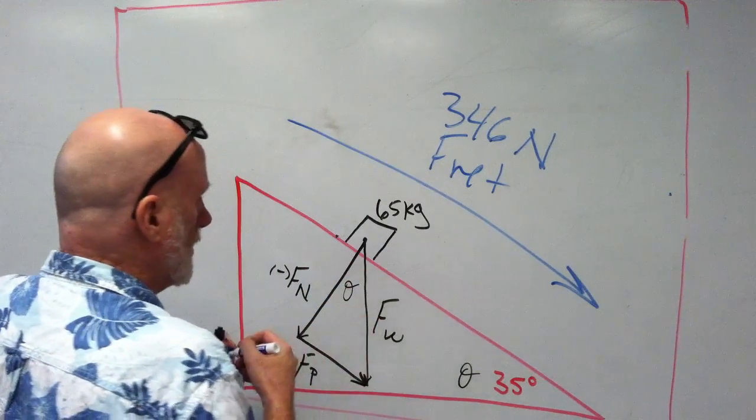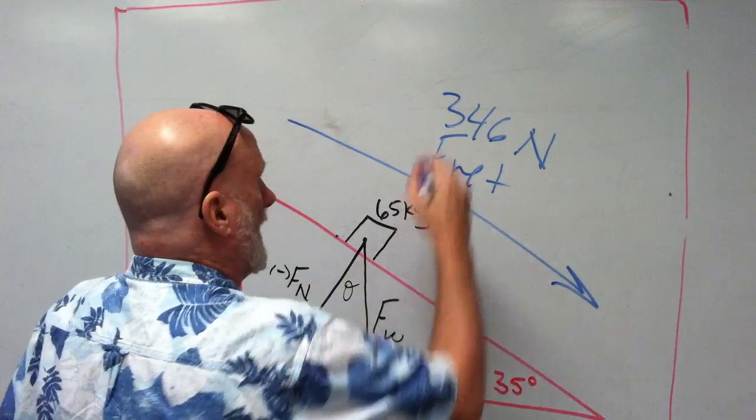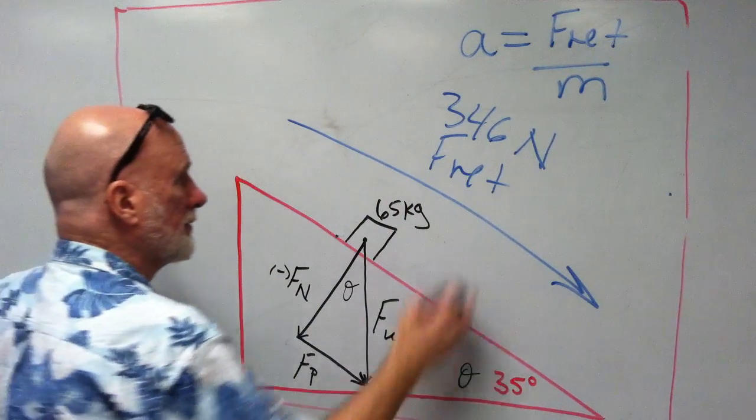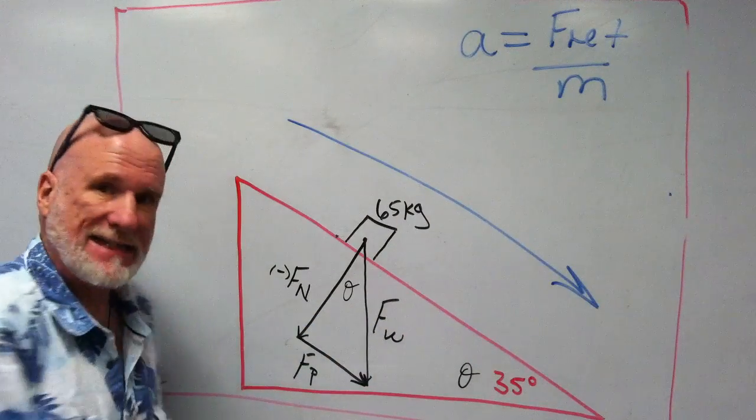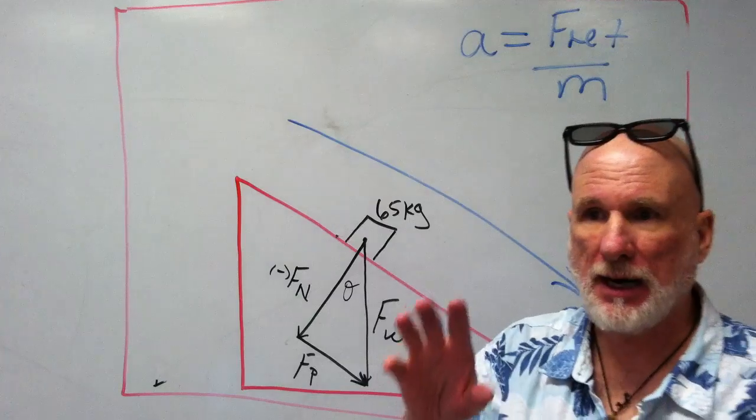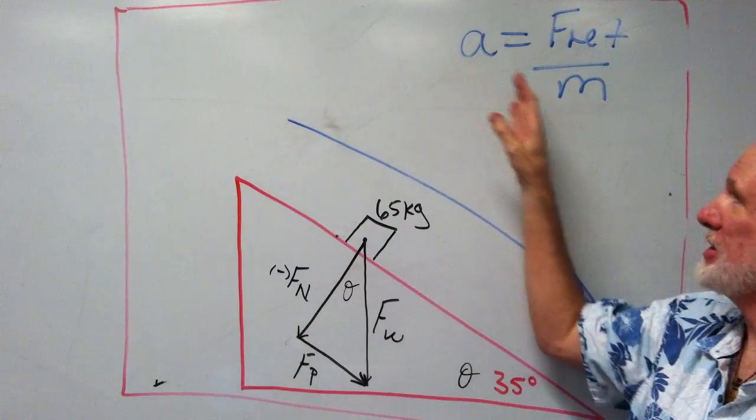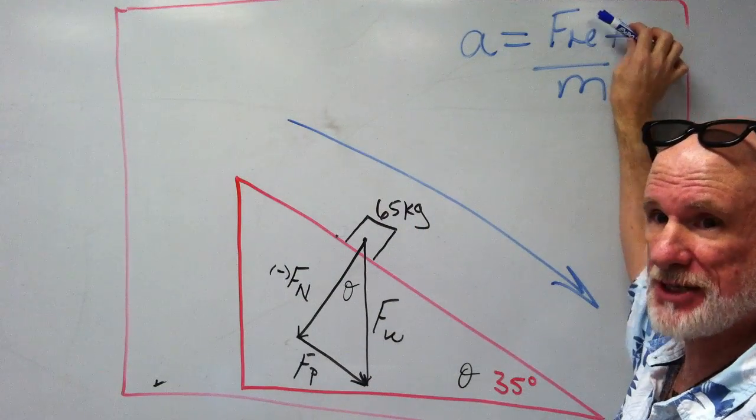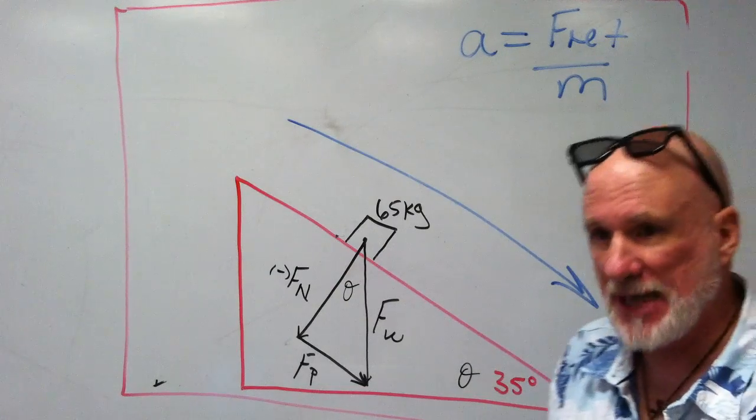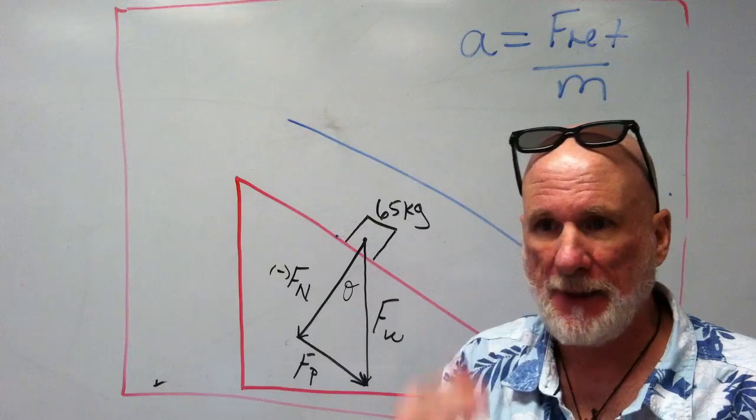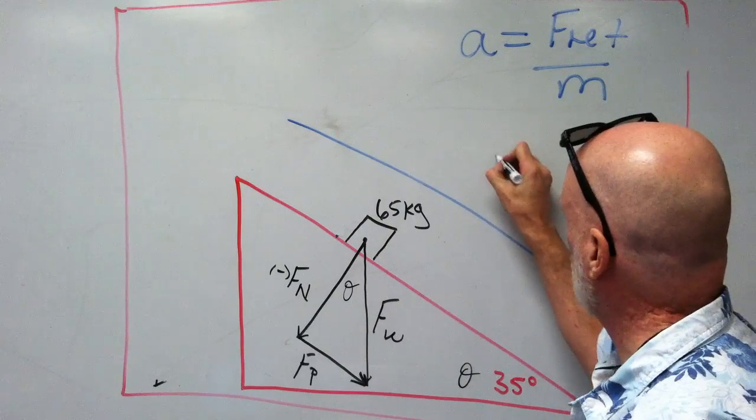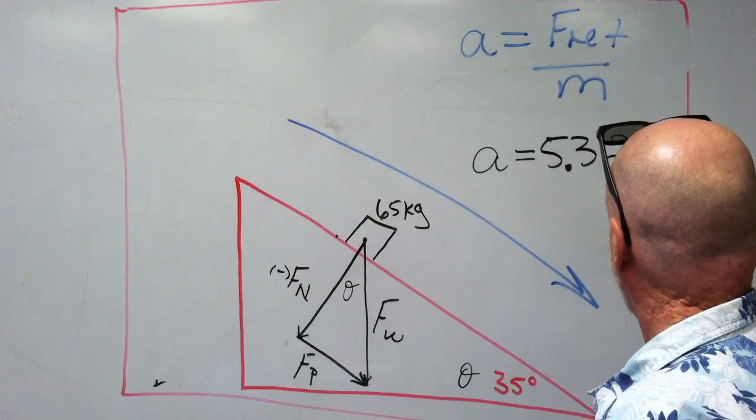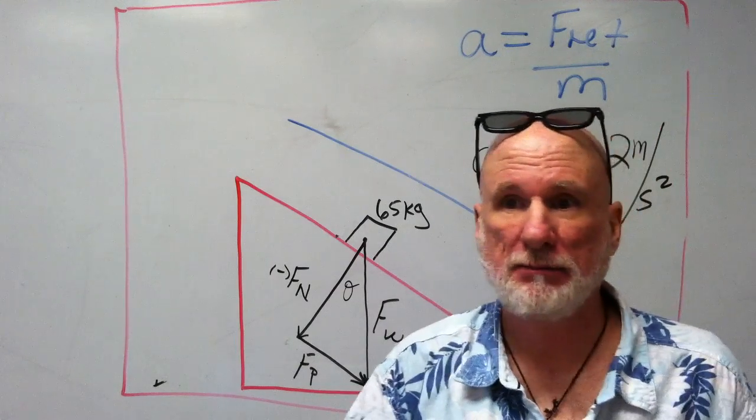Now, so we know that acceleration is F net over M. We know that. Acceleration is a quotient of F net over M. So, this is going to be 346 divided by 65. 346, put it in your calculator, divided by 65 is going to be 5.32. So, that's how it's going to accelerate.